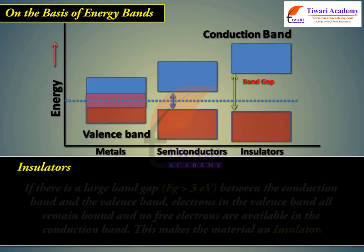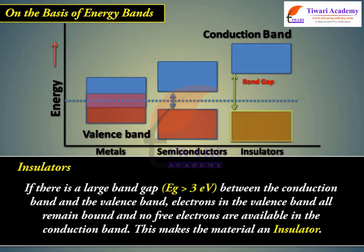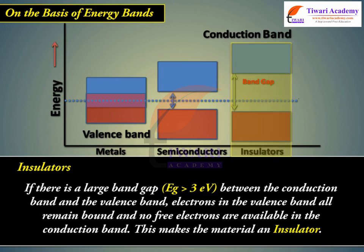Insulators: If there is a large band gap, e.g. greater than 3 eV, between the conduction band and the valence band, electrons in the valence band all remain bound and no free electrons are available in the conduction band. This makes the material an insulator.